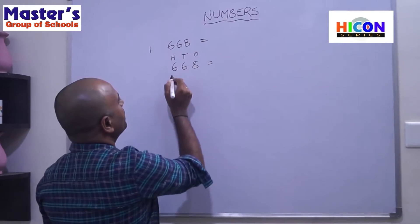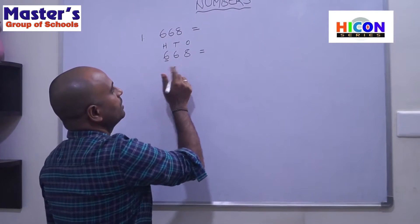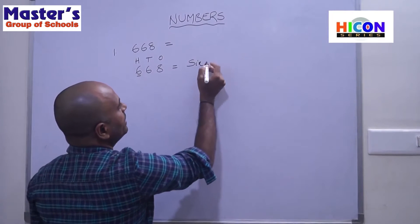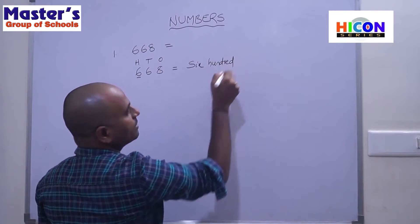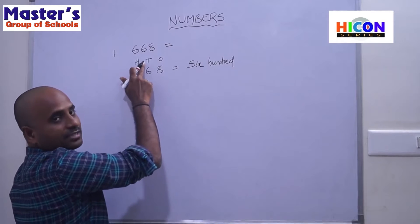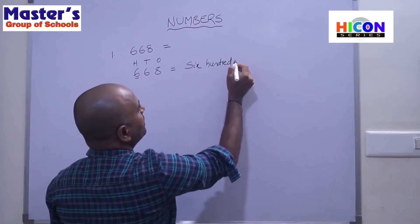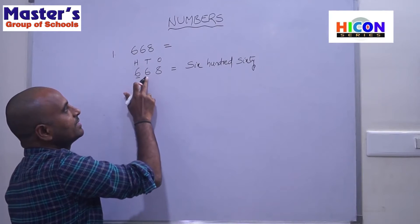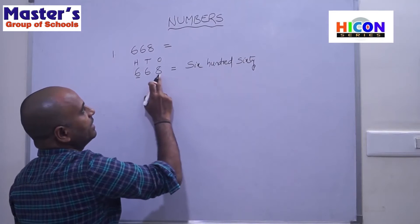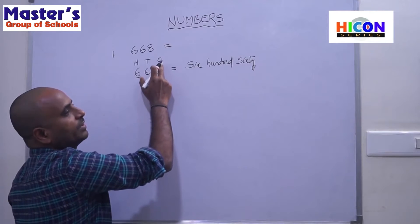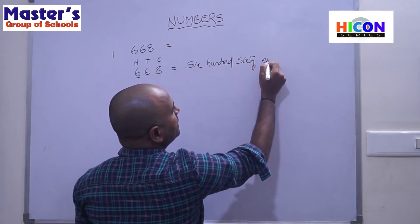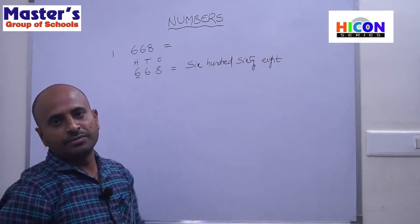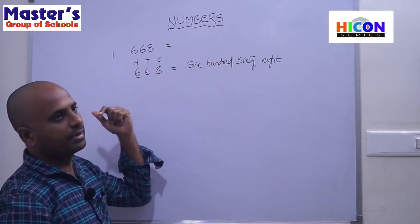Now write the number name using those place values. Six is in hundreds place, so that becomes six hundred. The next six is in tens place, so it becomes sixty. Eight is in ones place, so it becomes eight. So the number name for 668 is six hundred sixty eight. This is the way of writing a three-digit number as a number name.